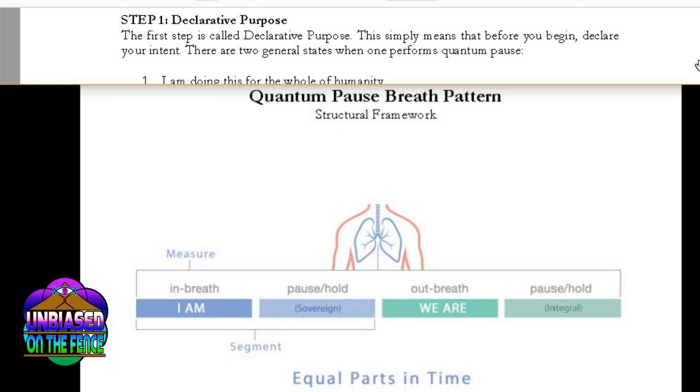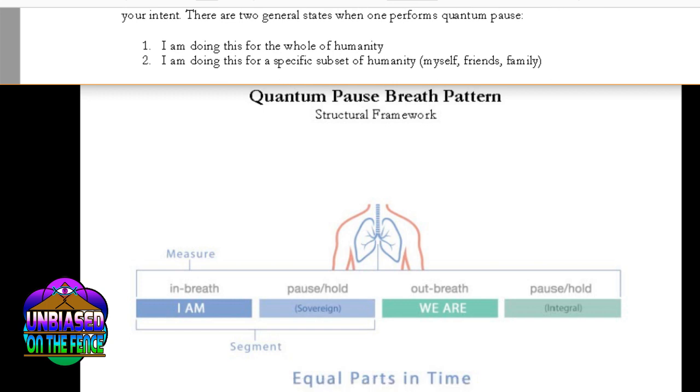But step one, declarative purpose. The first step is called declarative purpose. This simply means that before you begin, declare your intent. There are two general states when one performs quantum pause. One,